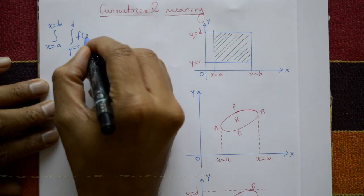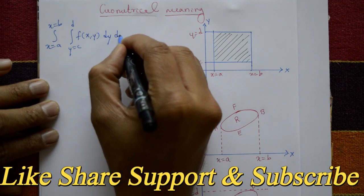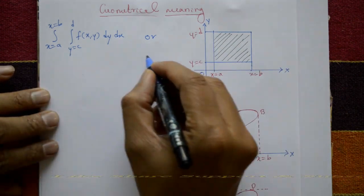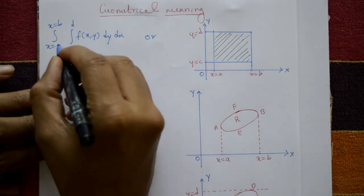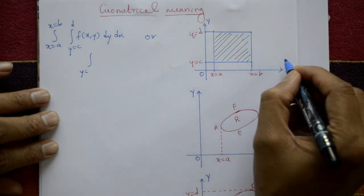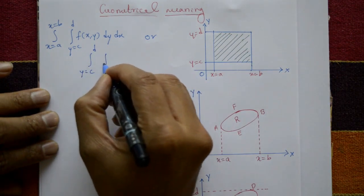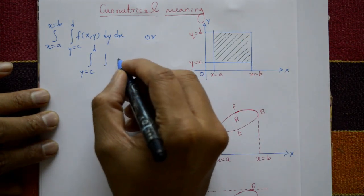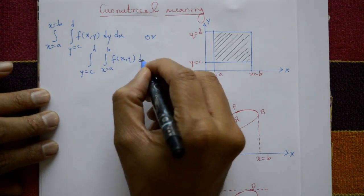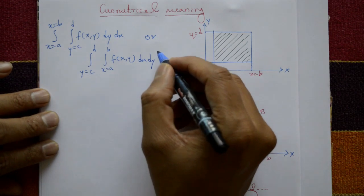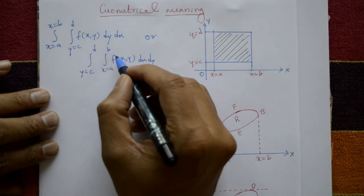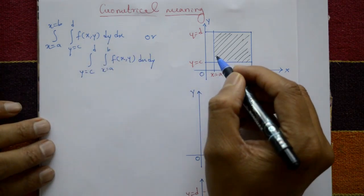This gives the area of the region, integrating f(x,y) with respect to y and with respect to x. The second order is: first take x then y, so integrate from y equals c to d, and then from x equals a to b — f(x,y) dx dy. You can use either order and you will get the same result.